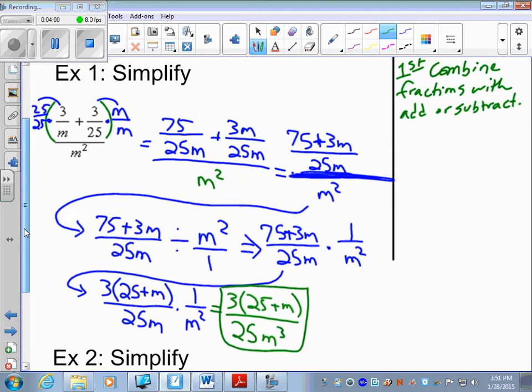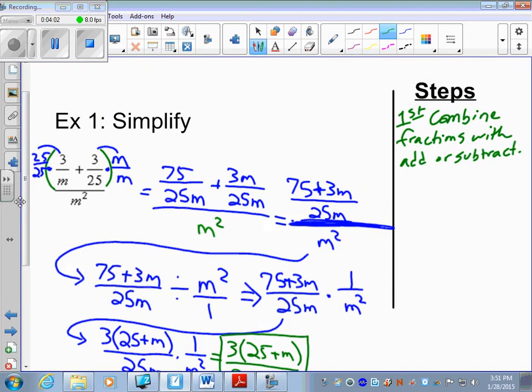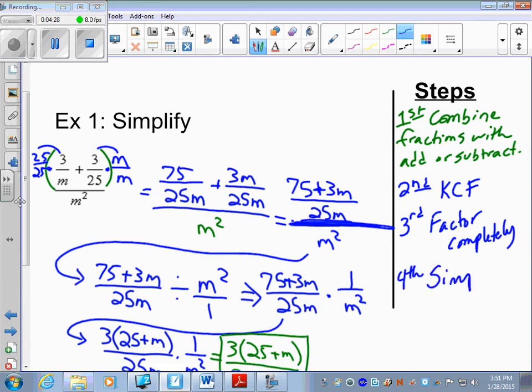Going back up to the steps. After the first step, the second step is to do KCF: keep it change flip. And then third, factor completely. And fourth, simplify. Now as we saw, simplifying is not always possible, you can't always simplify, but we always try.